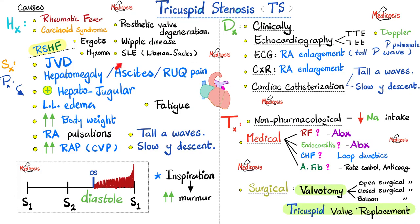Here is everything you need to know about tricuspid stenosis in one slide. The causes: rheumatic fever can lead to tricuspid stenosis. Carcinoid syndrome can cause it. Degeneration of a prosthetic artificial tricuspid valve can cause stenosis. Ergot alkaloids such as methysergide and ergotamine can contribute to valvular heart disease. Whipple disease can lead to tricuspid stenosis. A myxoma in the right atrium can obstruct the tricuspid valve. And rheumatological conditions such as systemic lupus erythematosus with the infamous Libman-Sacks endocarditis — which is sterile.